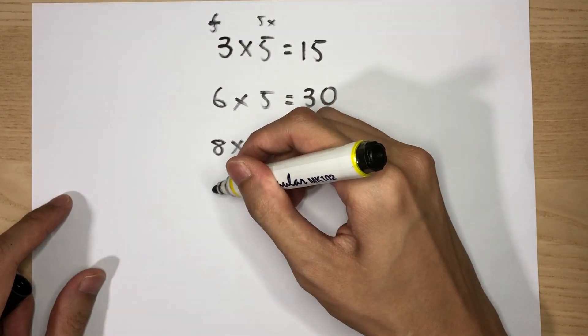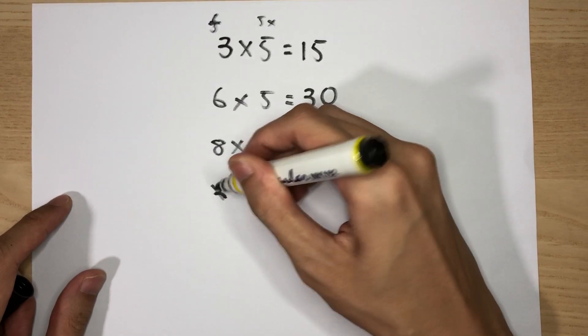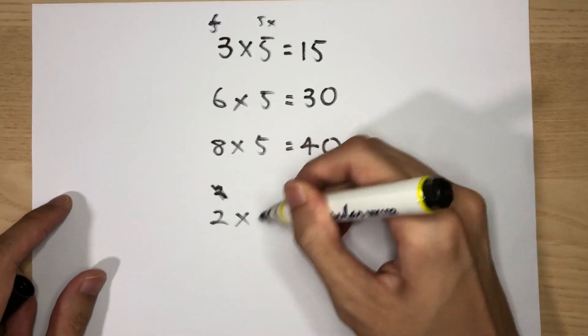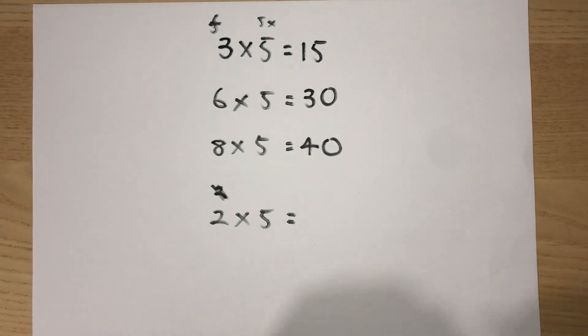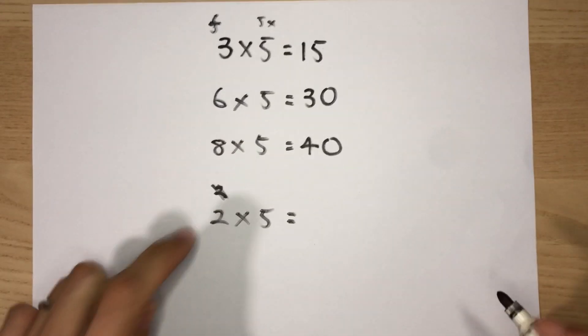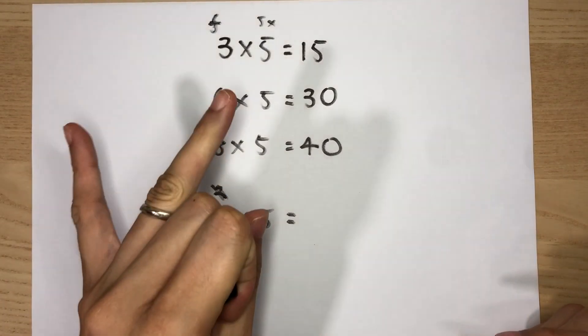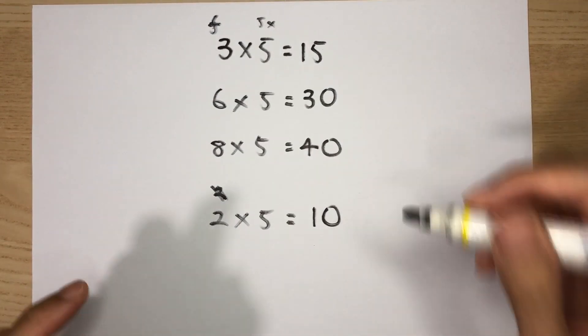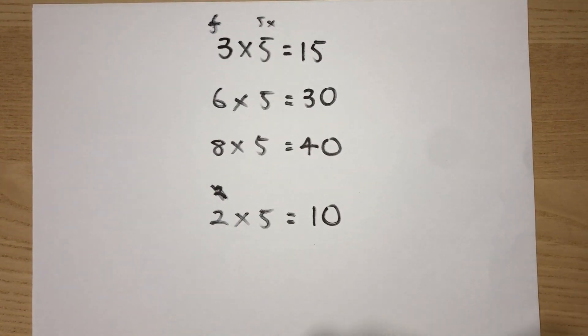Now, let's try another one. You have done that already. Let's try this example. 2 times 5. What is 2 times 5? Simple, right? 5, 10. 2 fingers. So 5, 10. The answer is 10. So 2 times 5 is 10.